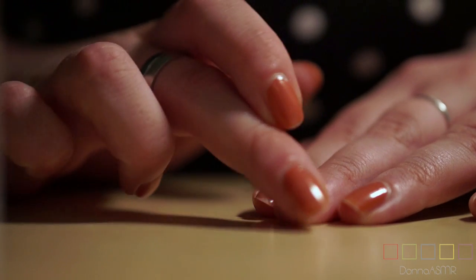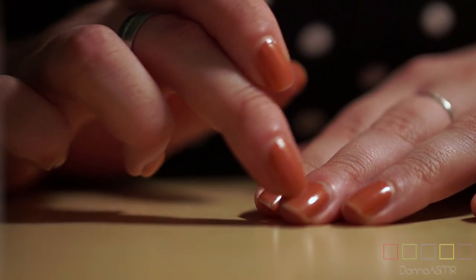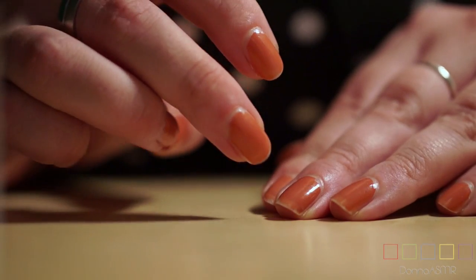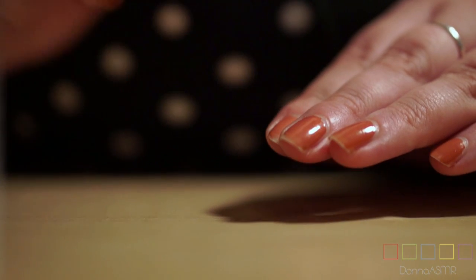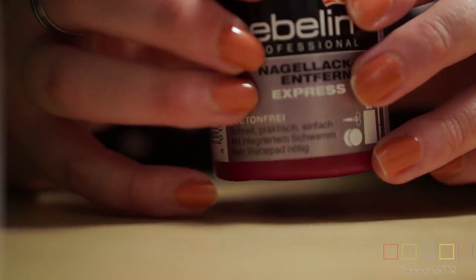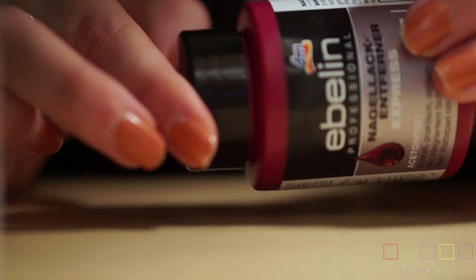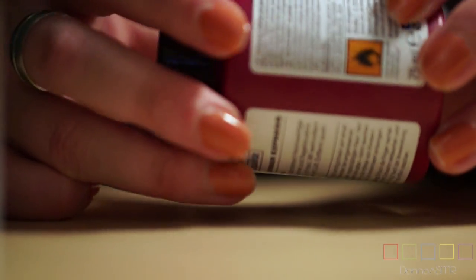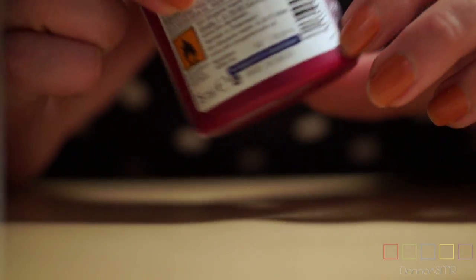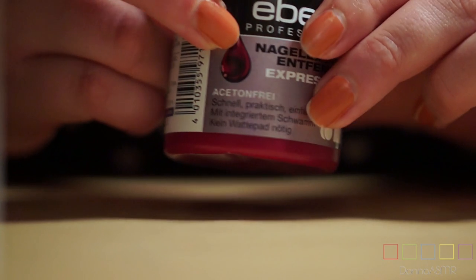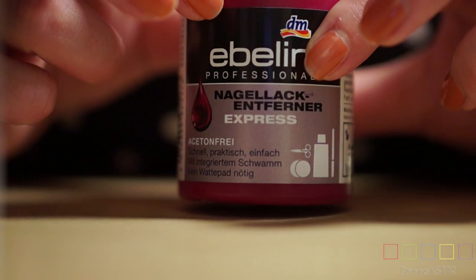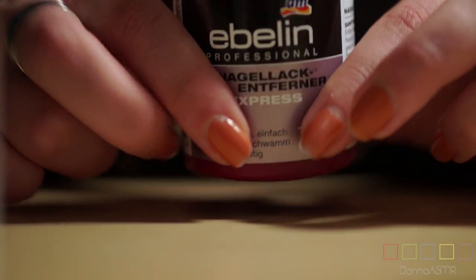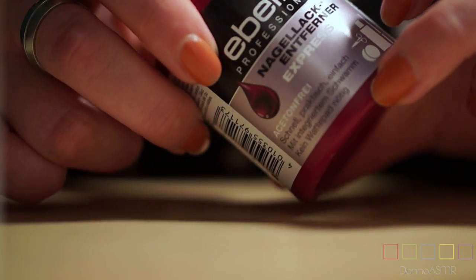So, I still have the orange nail polish here on my fingers and I will remove it with this here. It's a nail polish remover. And I'm sorry that the camera angle is a little too close on my fingers but I'm trying to figure out a new setup. And well, I haven't found a good solution yet.